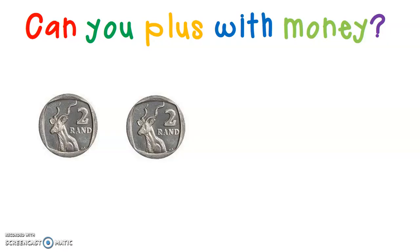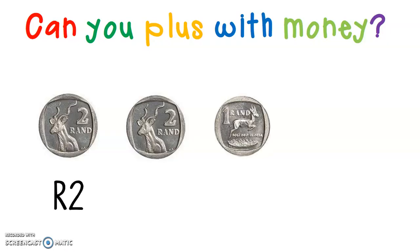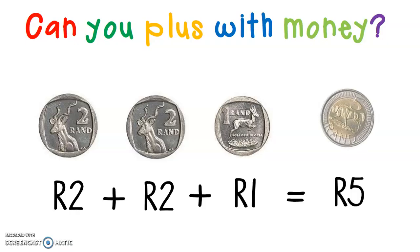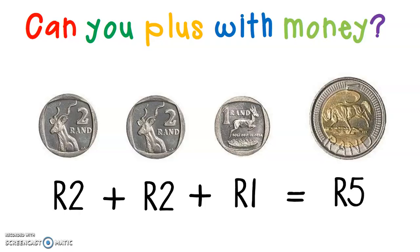Here is 2 Rand plus 2 Rand plus 1 Rand. Let's see if we add it together. 2 Rand plus 2 Rand plus 1 Rand equals — quickly count on your fingers: 1, 2, 3, 4, and 5. 2 Rand plus 2 Rand plus 1 Rand equals 5 Rand. And if I had a 5 Rand, it would look like this.